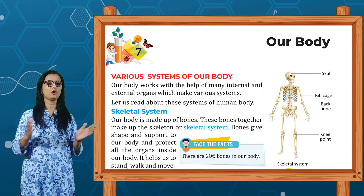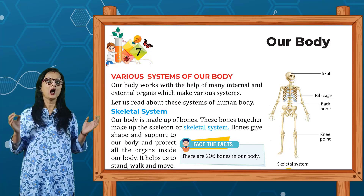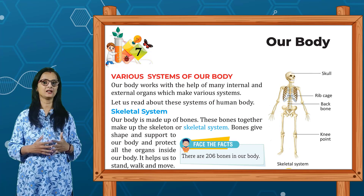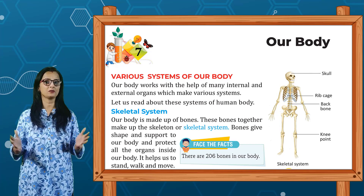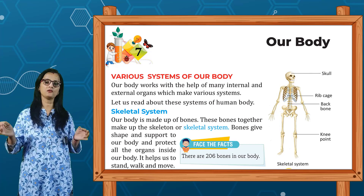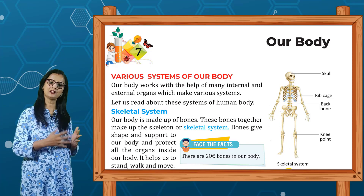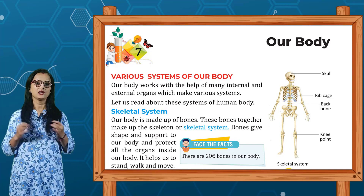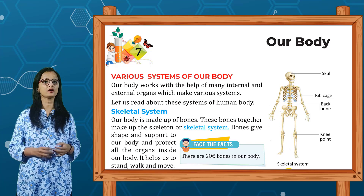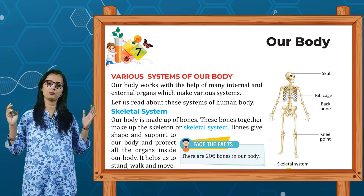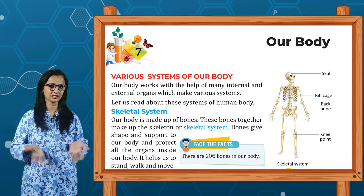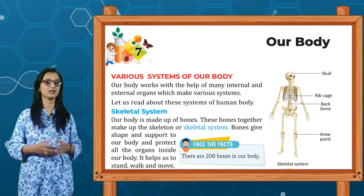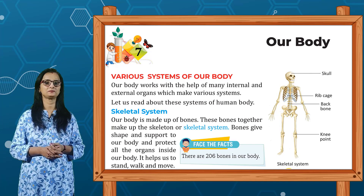Next topic is various systems of our body. Our body works with the help of many internal and external organs which make up various systems. The first is the skeletal system. Our body is made of bones; these bones together make up the skeletal system. Bones give shape and support to our body and protect all the organs inside. It helps us to stand, walk and move.